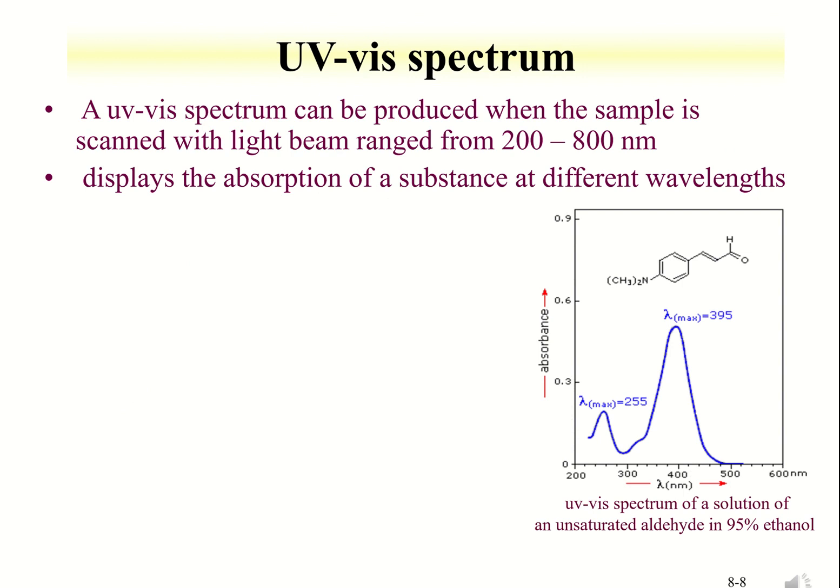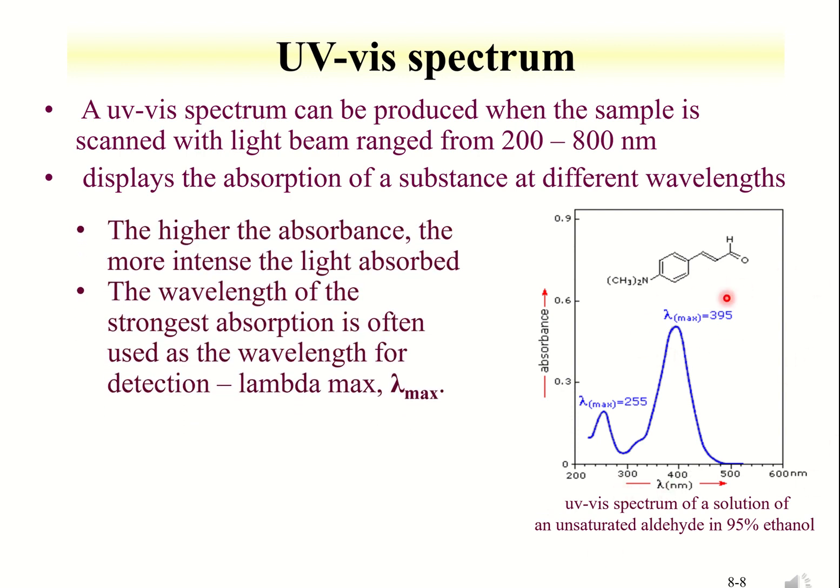This is an example of a UV-visible spectrum scan of an organic compound dissolved in ethanol. This spectrum is collected when you wish to identify the wavelength that gives the strongest absorption. This value of wavelength is known as lambda max, which can be used as a reference wavelength for detection in the subsequent analyses.